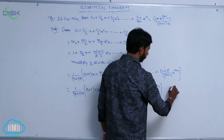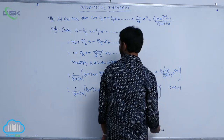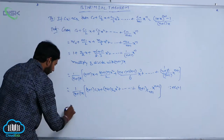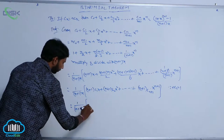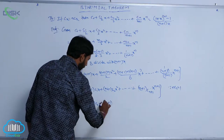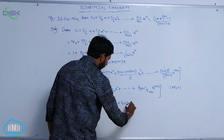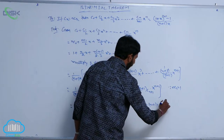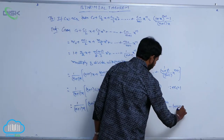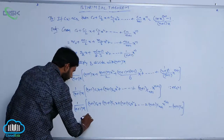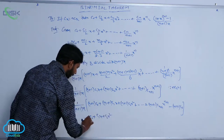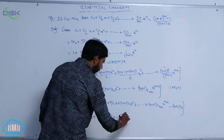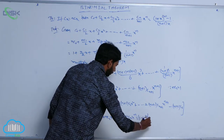Since nCₙ = 1, we have all terms of the form (n+1)C₁·x + (n+1)C₂·x² + ... + (n+1)C_{n+1}·x^{n+1}. Adding and separating (n+1)C₀, that is 1/[(n+1)x] · [(n+1)C₀ + (n+1)C₁·x + (n+1)C₂·x² + ... + (n+1)C_{n+1}·x^{n+1} - (n+1)C₀]. Since nC₀ + nC₁·x + nC₂·x² + ... + nCₙ·xⁿ = (1+x)ⁿ, using this formula, the result is [(1+x)^{n+1} - 1] / [(n+1)x].